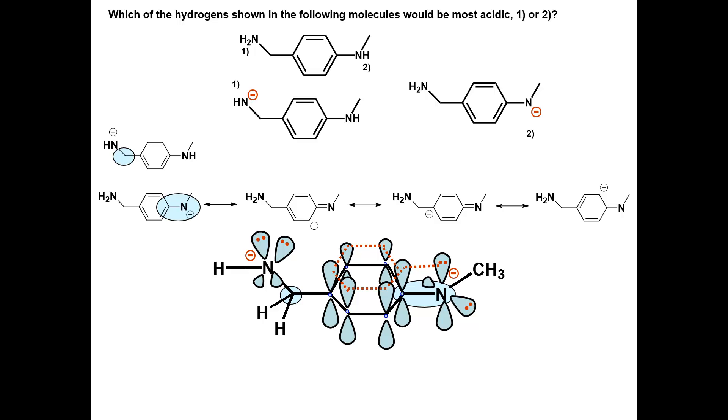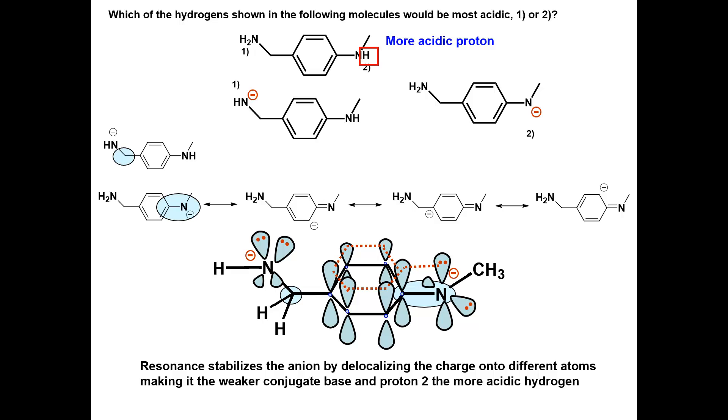Resonance will stabilize the anion by delocalizing the charge onto different atoms. Think of the hot potato analogy, making a weaker conjugate base and proton 2 the more acidic hydrogen.